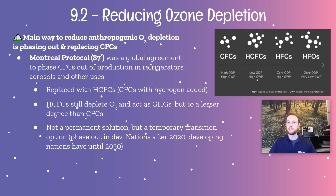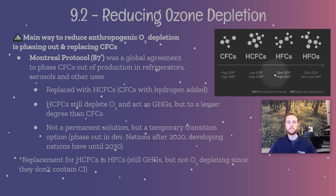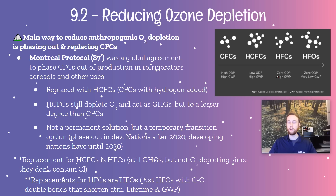HFCs are still greenhouse gases, but notice that they have zero ozone depleting potential. That is because we have taken the chlorine out of the equation — chlorine was the atom that was so good at breaking apart those ozone molecules. By removing chlorine from these products, that solved the issue of ozone depletion. However, we still have high greenhouse warming potential. So the fourth iteration or evolution here is something called hydrofluoro olefins, or HFOs. These are basically just HFCs, but in this case they have a carbon-carbon double bond, which shortens their atmospheric lifetime and in turn lowers their greenhouse warming potential dramatically.